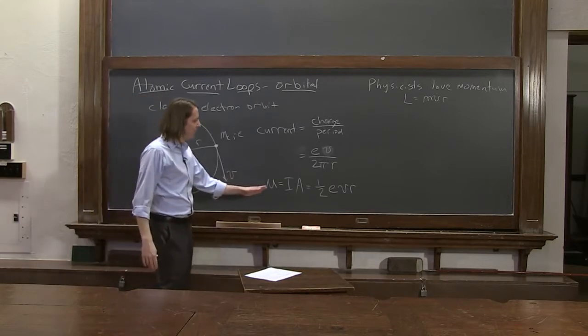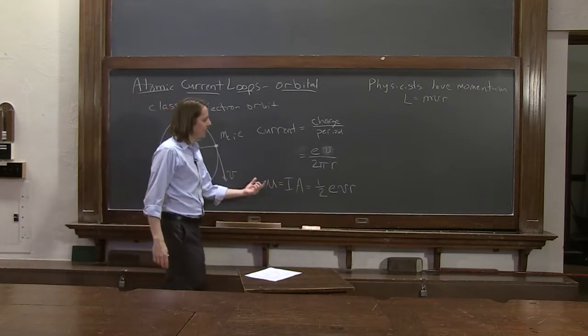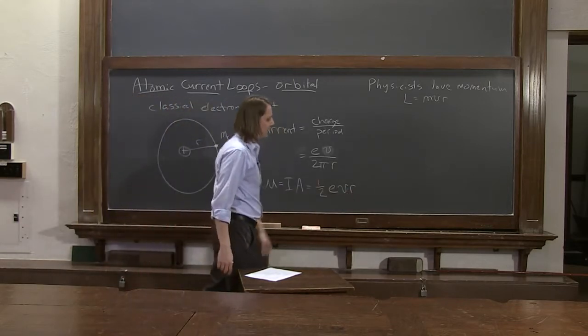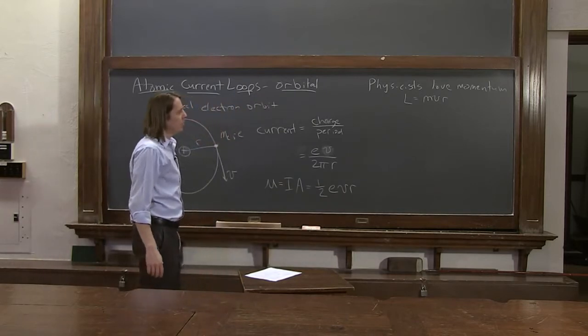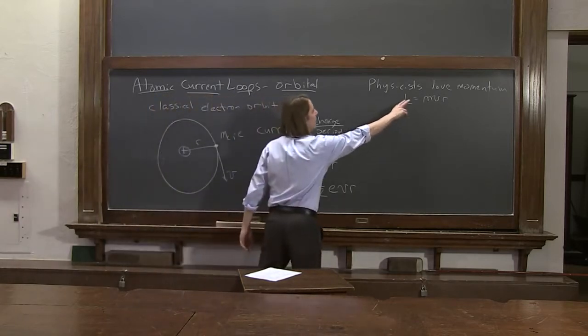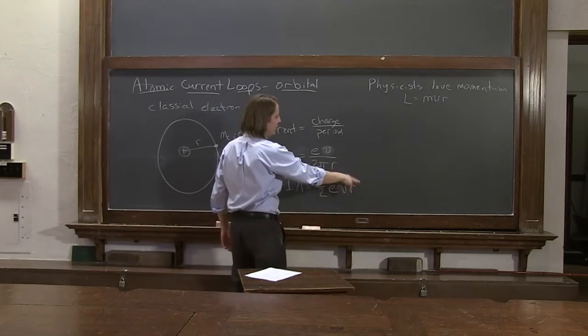So therefore, we don't describe the magnetic moment of the electron in terms of its velocity and radius. We substitute in L, and that's where your V and your R go.